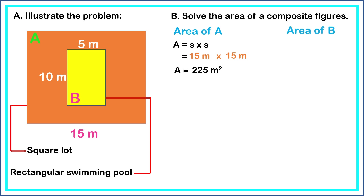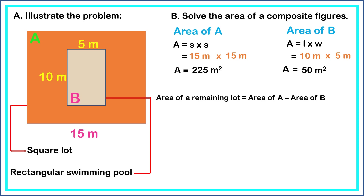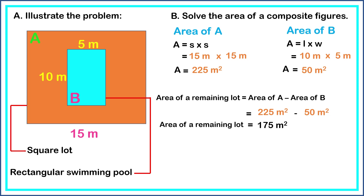Next, we get the area of Figure B. Figure B is a rectangle. The formula is: Area equals length times width. The length is 10 meters and the width is 5 meters, so 10 meters times 5 meters equals 50 square meters. To find the area of the remaining lot, we subtract the area of Figure B from Figure A: 225 square meters minus 50 square meters equals 175 square meters.